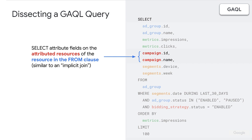Next we have attributed resources, and this is what I've referred to as an implicit join. We don't have joins in GAQL, but instead we have this attributed resources feature. Every ad group has a campaign because every ad group is associated with a campaign, and each ad group can only have one campaign — though each campaign can have many ad groups. Similarly, every ad group can only have one customer and one bidding strategy. As a result, when you have those types of relationships, you get the ability to pull in data from those attributed resources directly into your SELECT clause. You can look up which attributed resources are available on a given resource, and you can take any of the fields on those attributed resources and put them directly into your SELECT clause — those will be columns in your reporting output.